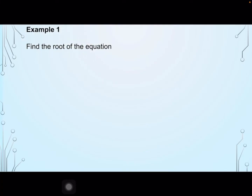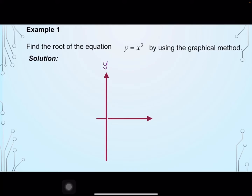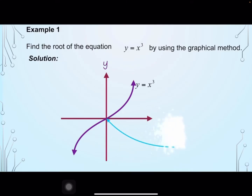Example 1: Find the root of the equation y equals x cubed by using the graphical method. Let's sketch the graph of y equals x cubed, showing the y-axis, x-axis, and the curve y equals x cubed. Where is the root? The root is where the curve cuts the x-axis, which is at x equals 0. Thus, the root is 0.